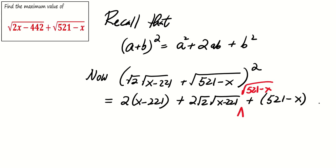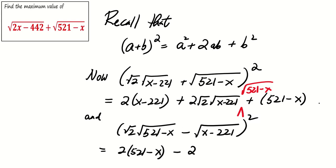Similarly, square root 2 square root of 521 minus x minus square root of x minus 221 squared equals 2 times 521 minus x minus 2 times square root 2 times square root of 521 minus x times square root of x minus 221 plus x minus 221. And now, label these two equations as equation 1 and equation 2.